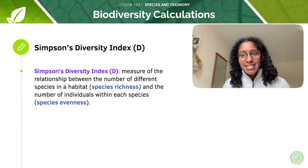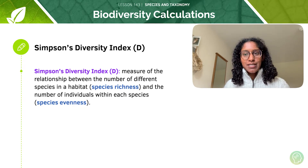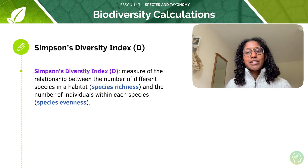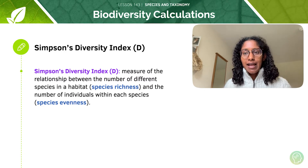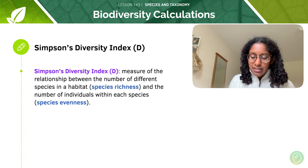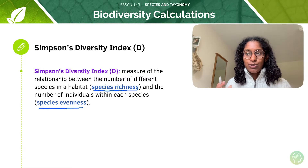Our diversity index is going to take into account both of these measures. The diversity index is a measure of the relationship between the number of different species in a habitat — that's species richness — and the number of individuals within each species — that's species evenness. So those are your definitions recapped.